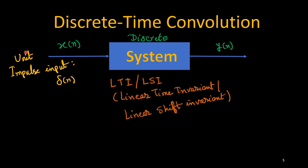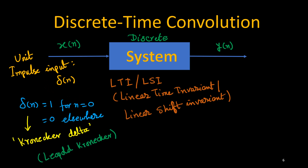If we apply a unit impulse input, denoted by δ(n), to this system — δ(n) is the Kronecker delta function, named after scientist Leopold Kronecker — its value is 1 when n equals 0, and 0 otherwise. So only at the origin, n equal to 0, its value is 1.